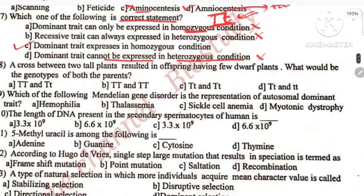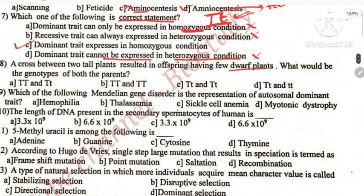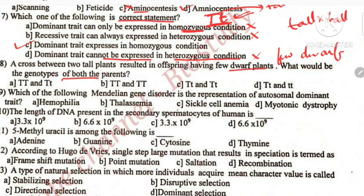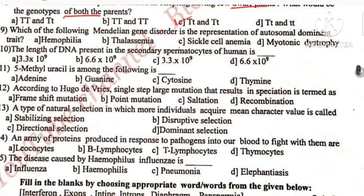Cross between two tall plants resulted in offspring having few dwarf plants. Tall crossed with tall — why did dwarf appear? Because a few dwarfs appeared, we can determine the genotype of the parents. To get dwarf offspring, the genotype must be heterozygous. So the right option is option C.